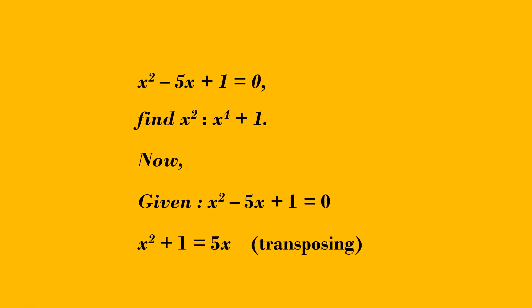We are given x square minus 5x plus 1 equal to 0. Transpose 5x to the right side. We get x square plus 1 equal to 5x.